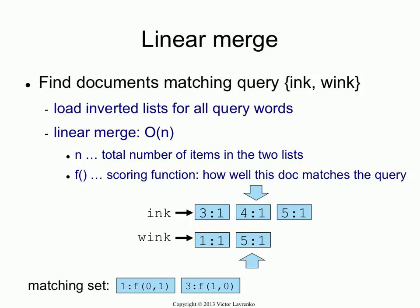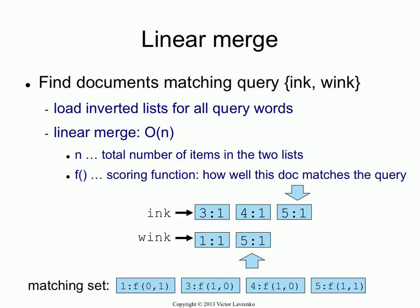Increment three to four, do the comparison again — still not equal — call the scoring function, increment the pointer. Now finally, the pointer to 'ink' has document five, and the pointer to 'wink' also has document five. A match! I found a document where both terms are present. I call the scoring function saying: document five had both terms with frequency one — and that's a match if you're doing Boolean stuff. Then you increment both pointers.